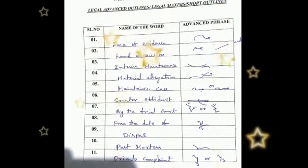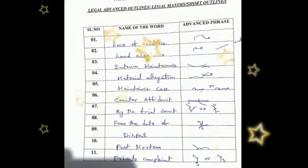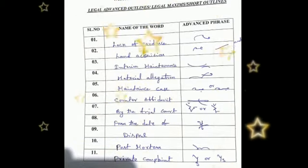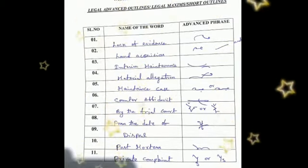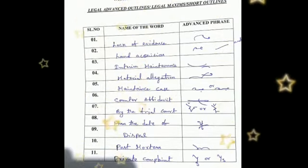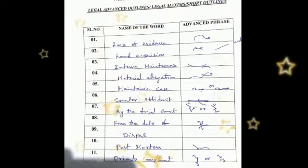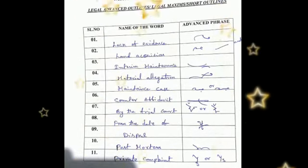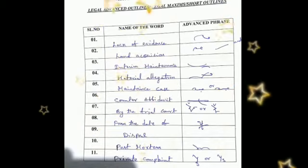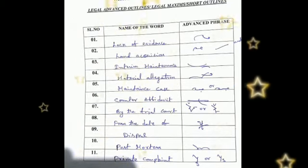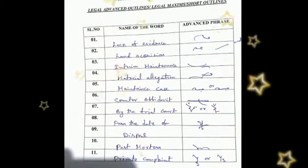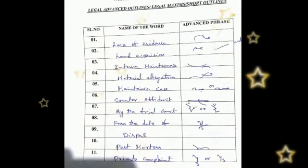Continuing 'material allegation': attach L and intersect the -gation hook for the sound of allegation. The next word is 'maintenance.' The outline of the word is M half, N hook, then N half, and write K circles.